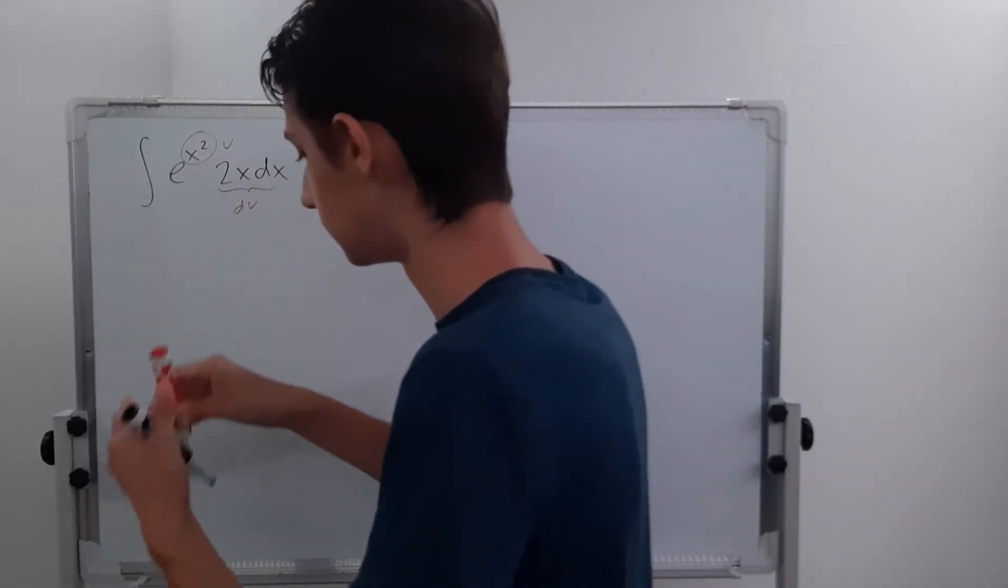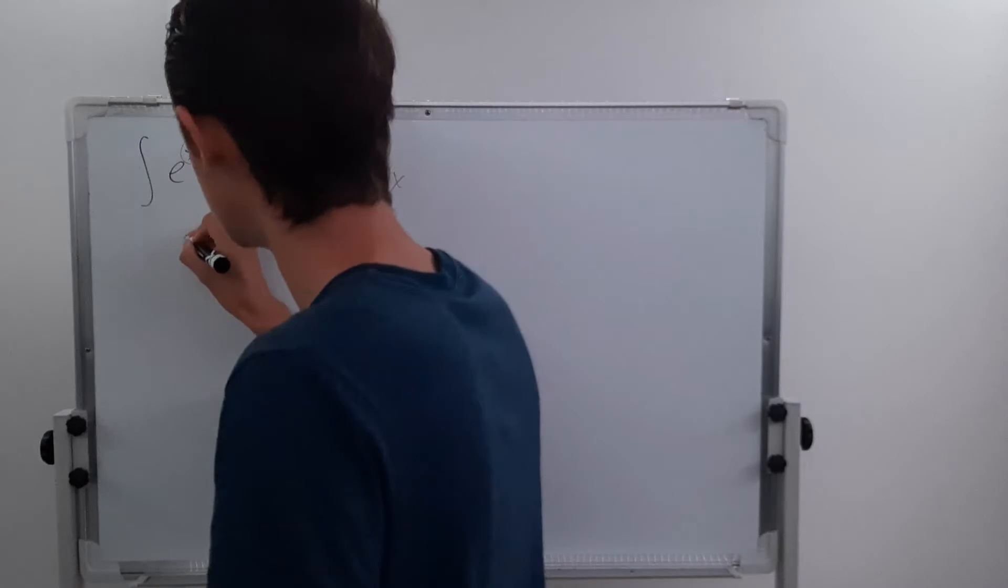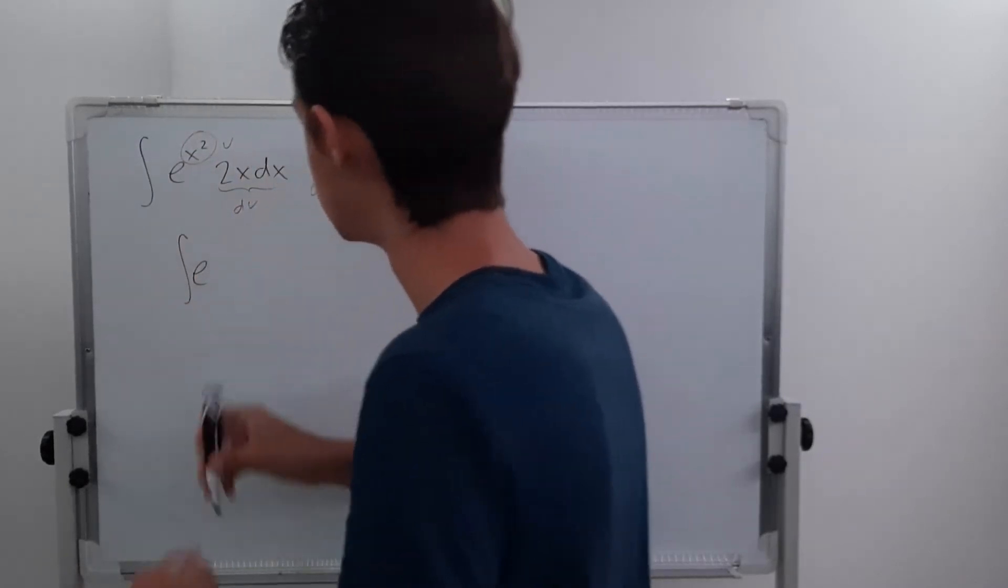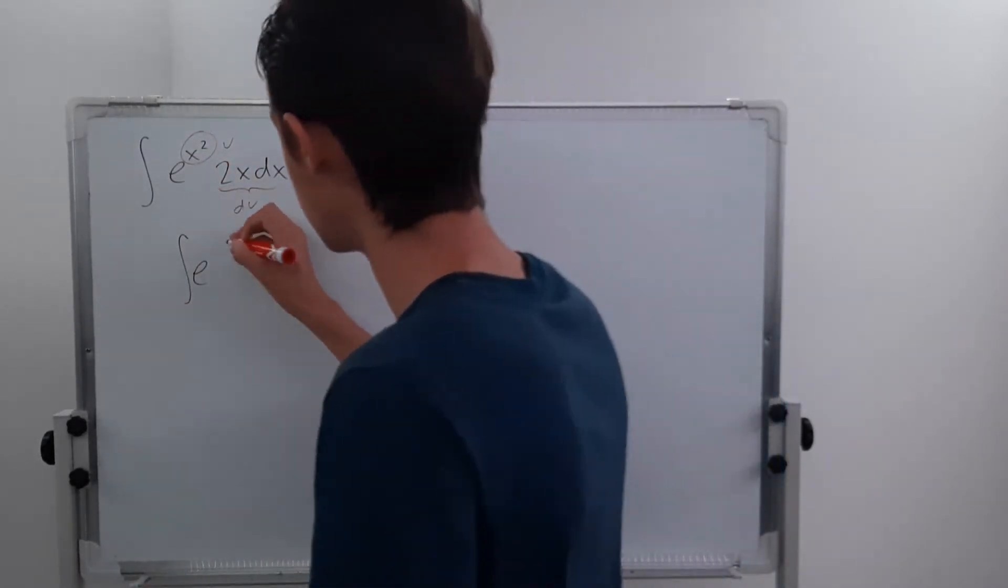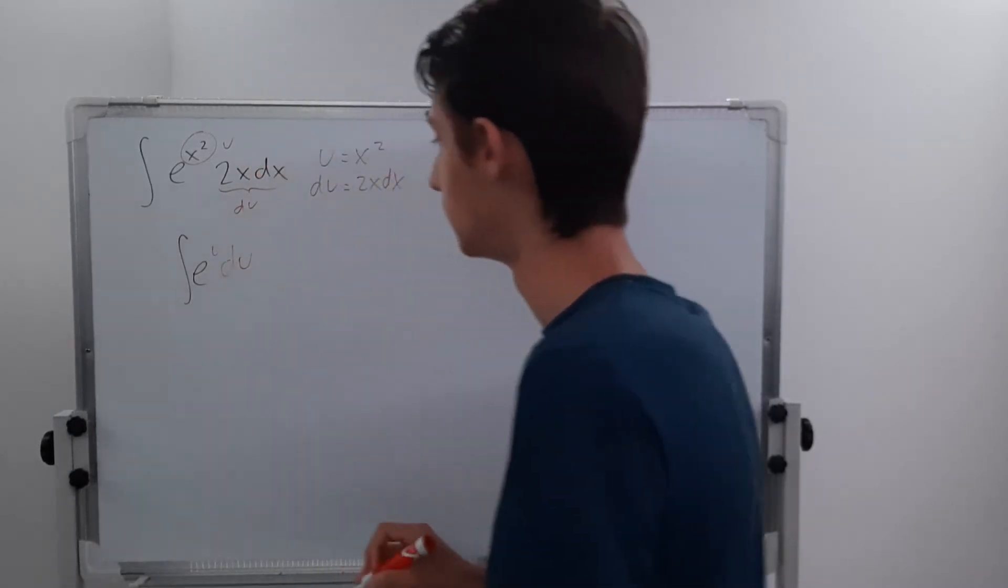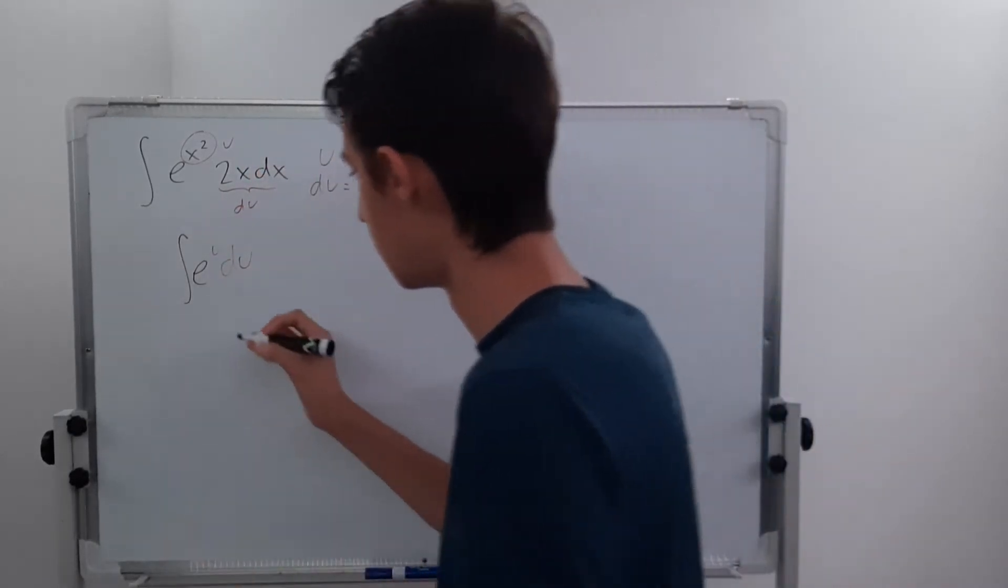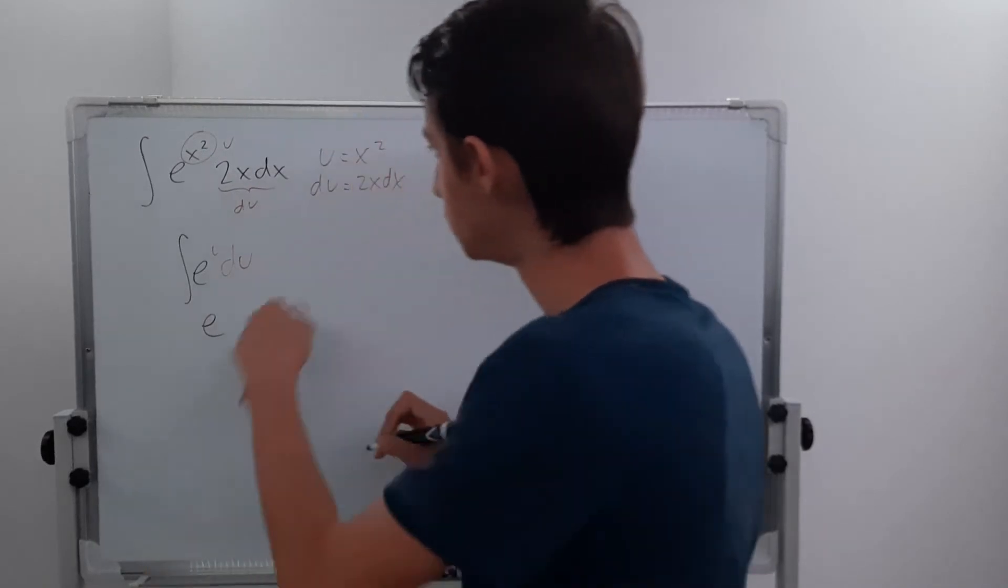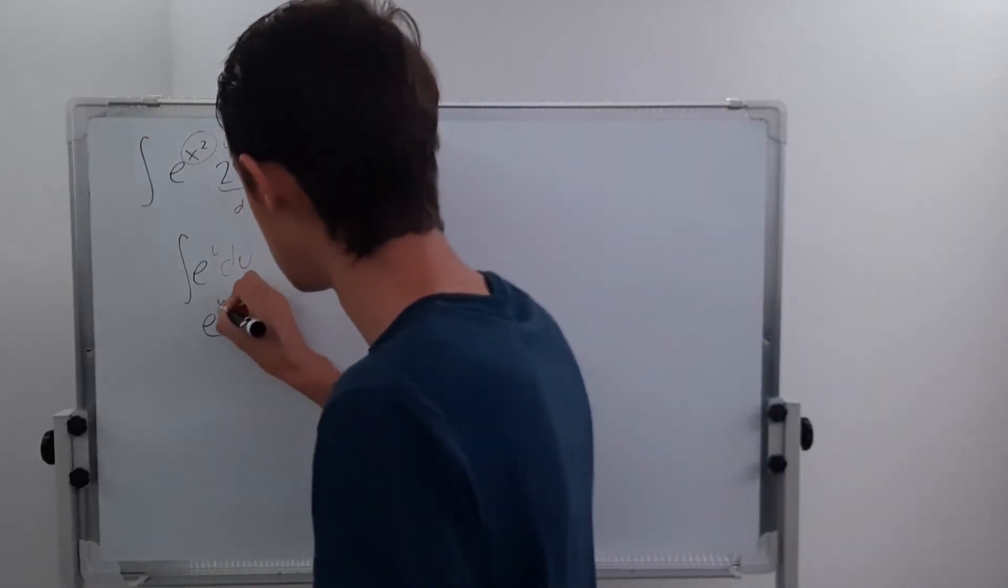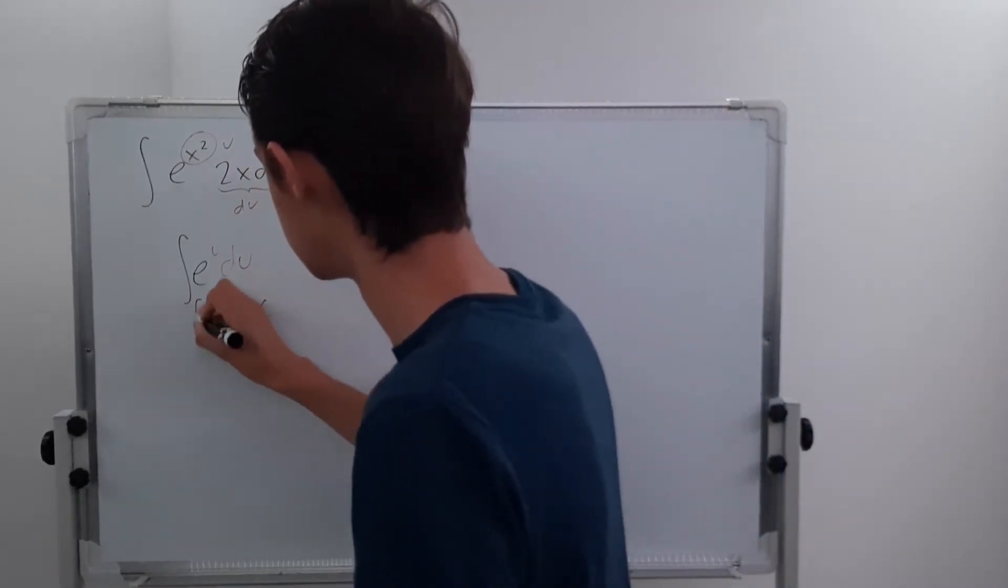So all this is is the integral of e to the u times du. And this is just going to give you e to the u, which is x squared plus c, and that's your answer.